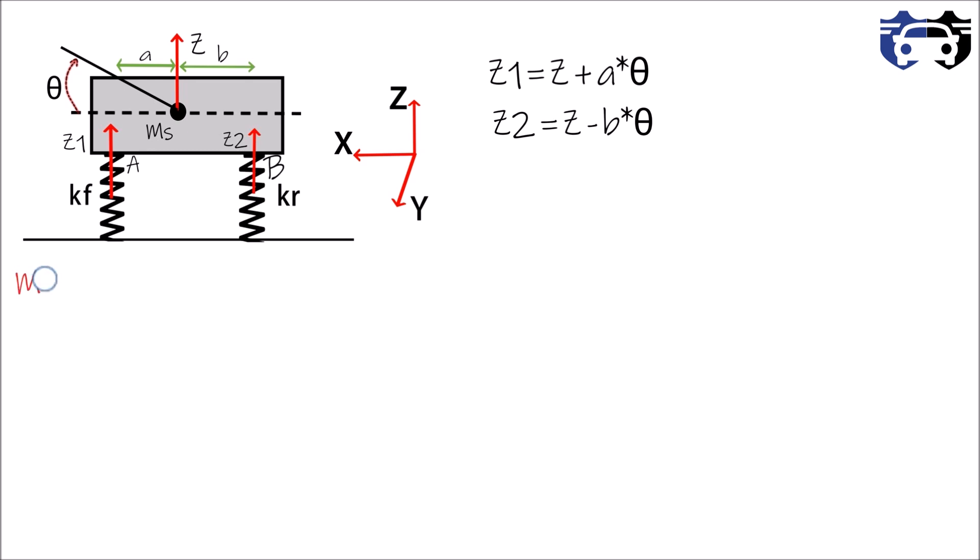Unbalancing all the forces along z direction, we can write Ms into z double dot, where z double dot is an acceleration in z direction, plus Kf into z1 plus Kr into z2 equals to zero. This is our first equation. Now we can write Iy, where Iy is the moment of inertia, multiply by theta double dot, that's the angular acceleration, plus Kf multiply by a multiply by z1 minus Kr multiply by b multiply by z2 equals to zero. This is our equation two.